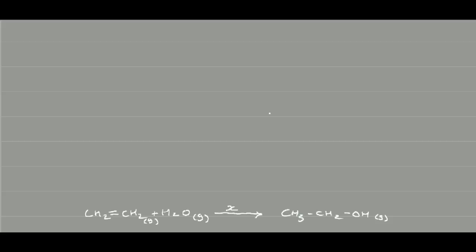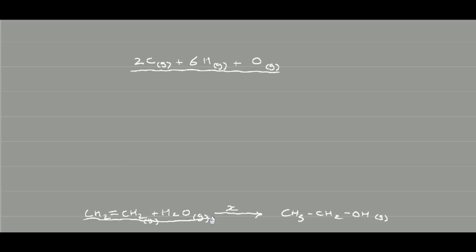Counting the atoms: there are 2 carbons, 6 hydrogens, and 1 oxygen. What we have done is dissociated every single bond in both molecules — in the water and the ethene — to produce this set of dissociated atoms. We can do the same for the products.